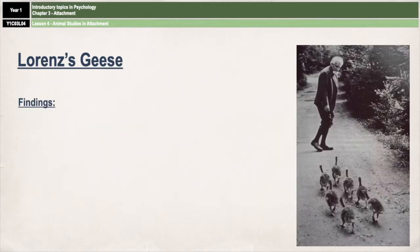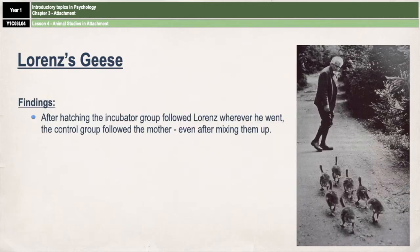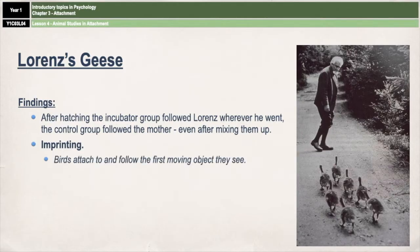After they hatched, Lorenz found that the incubator group followed him wherever he went, whereas the control group followed the mother wherever she went. Even after mixing the two groups up, they still managed to divide themselves back into control group and incubator group, and proceeded to follow either Lorenz or the mother. Lorenz concluded that the incubator group had imprinted on him. Imprinting is a process by which birds attach to and follow the first moving object that they see after hatching.